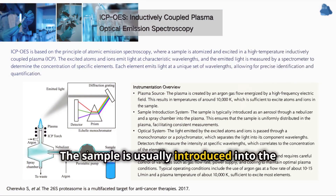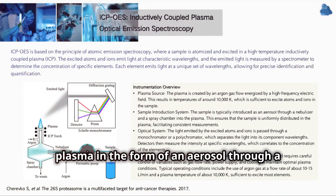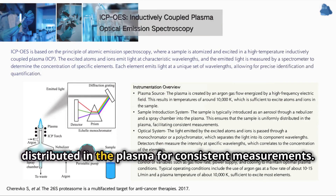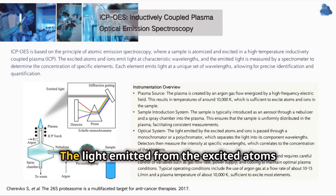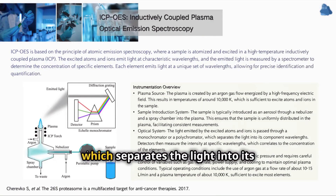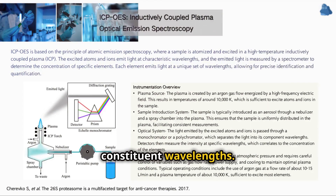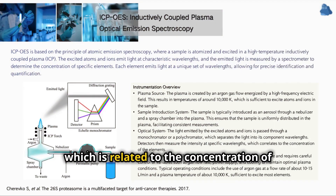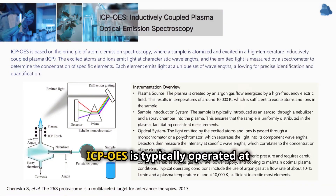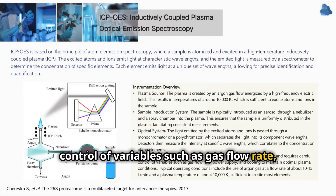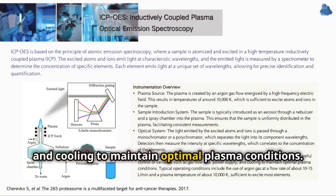The sample is usually introduced into the plasma in the form of an aerosol, through a nebulizer and spray chamber. This ensures that the sample is evenly distributed in the plasma for consistent measurements. The light emitted from the excited atoms and ions is passed through a monochromator or polychromator, which separates the light into its constituent wavelengths. The detector then measures the intensity at a specific wavelength, which is related to the concentration of the element. ICP-OES is typically operated at atmospheric pressure and requires careful control of variables such as gas flow rate, power supply, and cooling to maintain optimal plasma conditions.